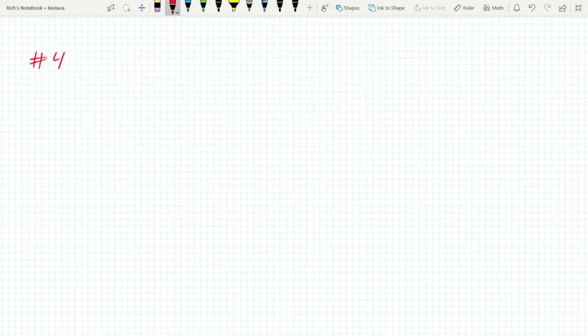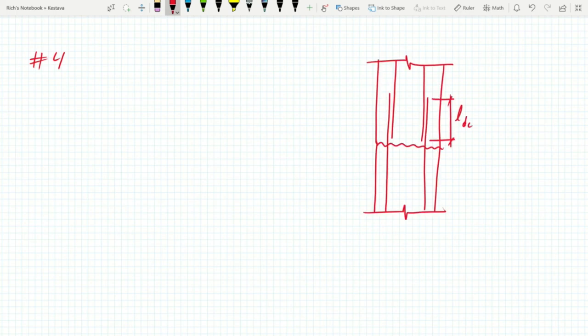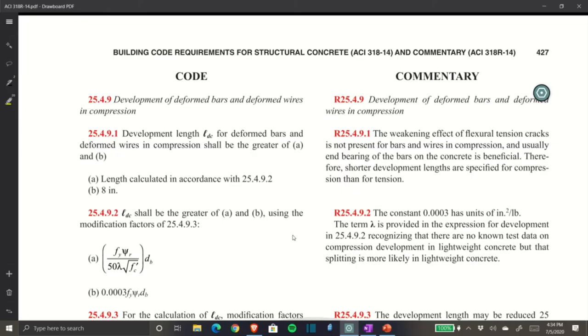Last one, number four. The previous three were tension connections. And now, for option number four, you have development of deformed bars and deformed wires in compression. For this problem, we're going to have a column scenario here, where they've cast the column to a certain height. You have the rebar sticking out, and then now they're lapping on additional column reinforcing, and then going to cast an upper portion of the column. Your development length of that compressive reinforcing is denoted by LDC. Let's see our requirements and jump over to the ACI.